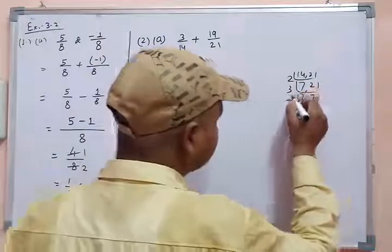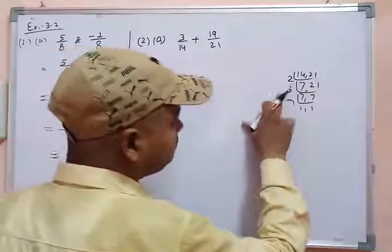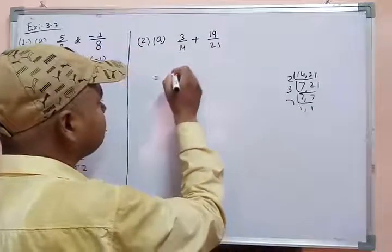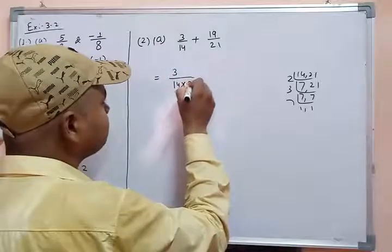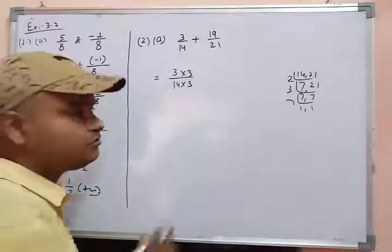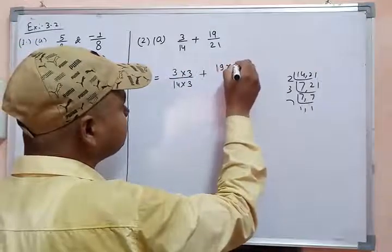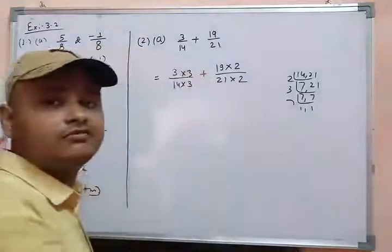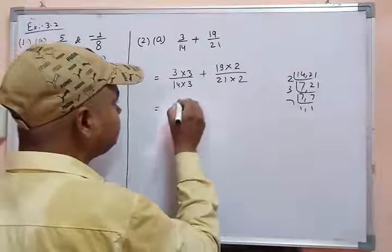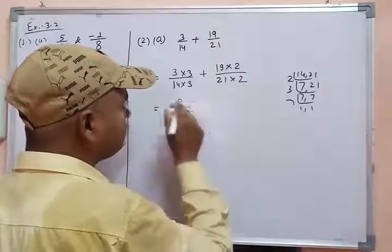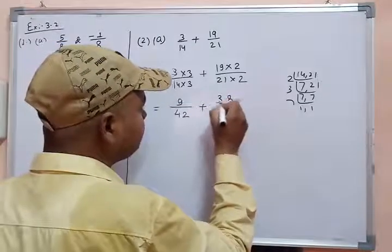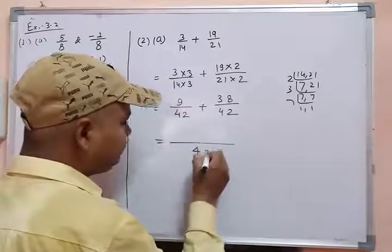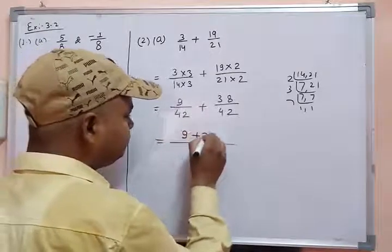Continuing the LCM calculation: 2 × 3 × 7 = 42. So the LCM of 14 and 21 is 42. It can be written as: multiply numerator and denominator by 3 (since 14 × 3 = 42), and multiply by 2 (since 21 × 2 = 42). Now both rational numbers are like rational numbers with denominator 42.